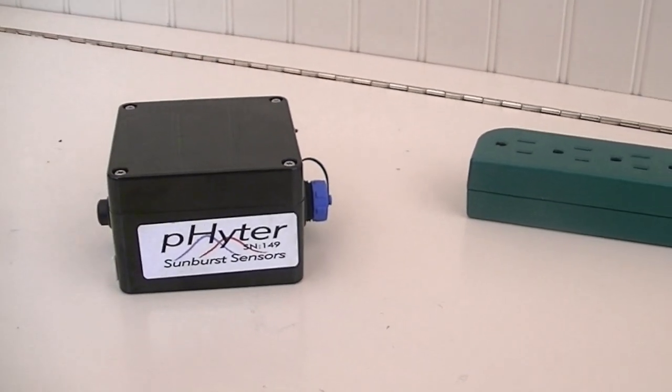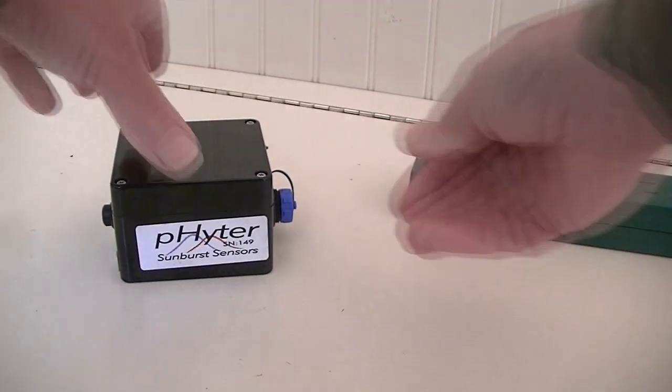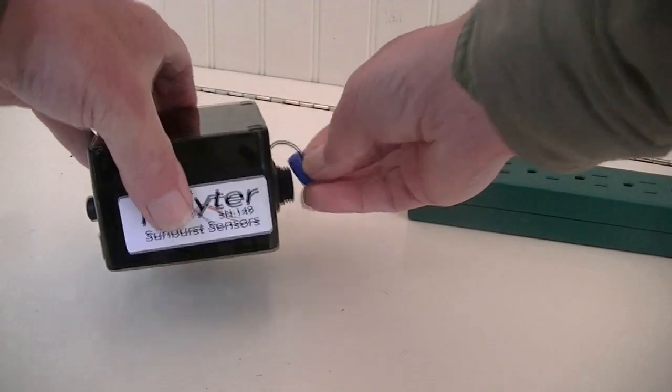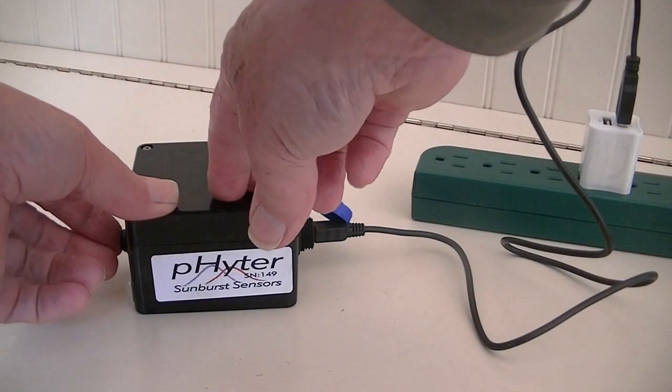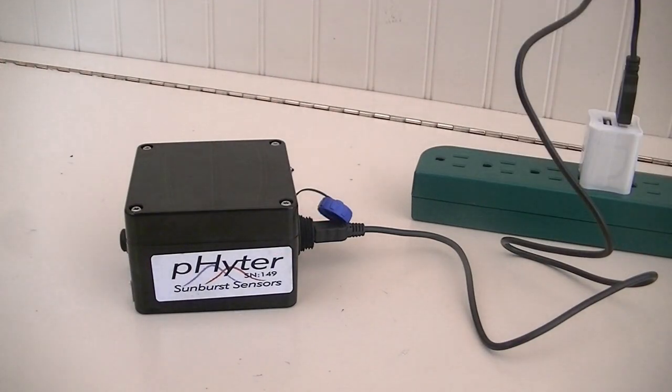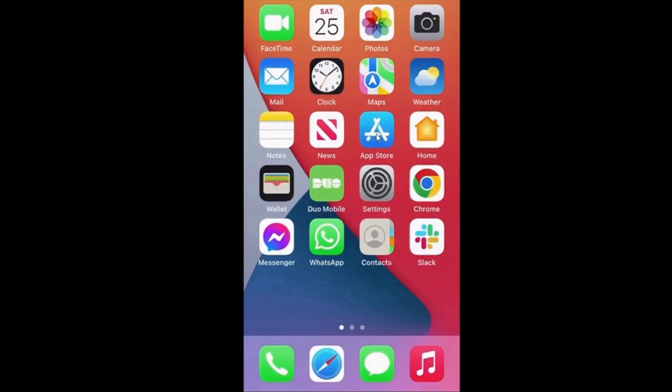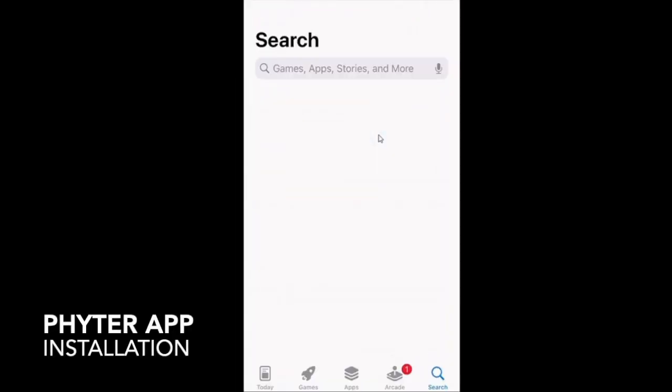Before using Phyta for the first time, we need to charge it up with a USB cable. Make sure you press the on button fully in. It takes a couple of hours or so to charge up. And once charged up, it will last for quite a few measurements.